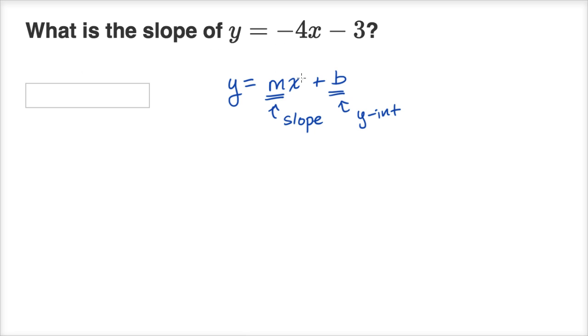So if they're saying, what is the slope here? Well, I just need to figure out, what is the coefficient on this x term? And you can see that the coefficient here is a negative four. So that is going to be our m, that is going to be our slope.